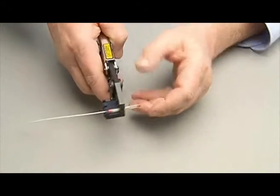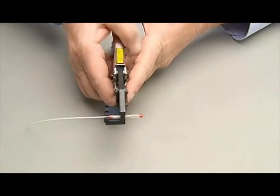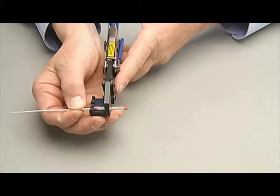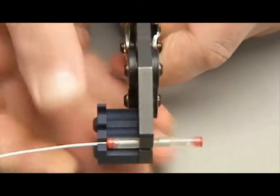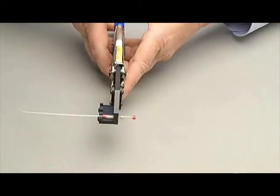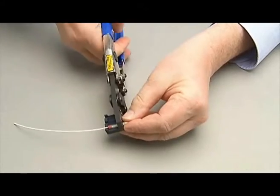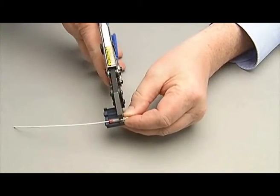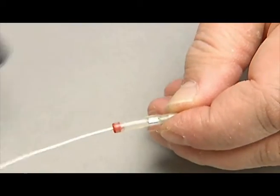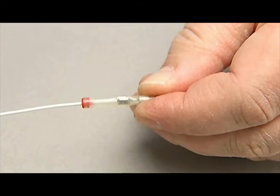Before crimping, close the tool jaws only to the point that the tool holds the crimp splice. Gently push the wire to ensure it's fully inserted. Then crimp the splice. The tool has a full ratchet design that must be fully engaged to release. Check to see that the splice is crimped and can be seen through the window.